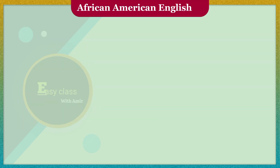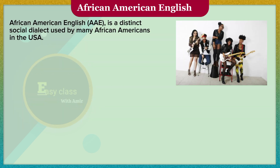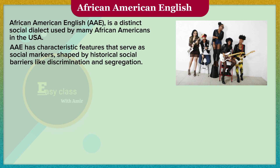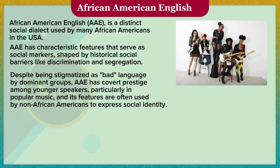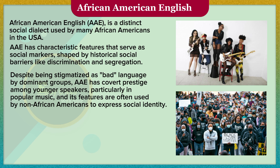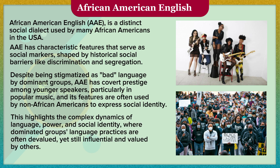African American English (AAVE) is a distinct social dialect used by many African Americans in the USA. AAVE has characteristic features that serve as social markers, shaped by historical social barriers like discrimination and segregation. Despite being stigmatized as 'bad language' by dominant groups, AAVE has covert prestige among younger speakers, particularly in popular music, and its features are often used by non-African Americans to express social identity. This highlights the complex dynamics of language, power, and social identity, where dominated groups' language practices are often devalued, yet still influential and valued by others.